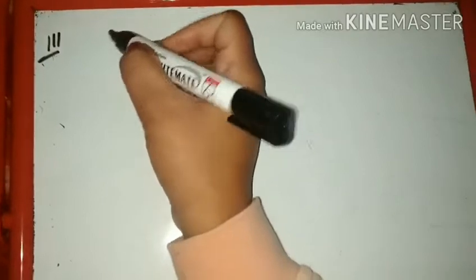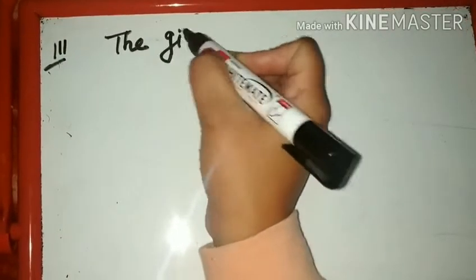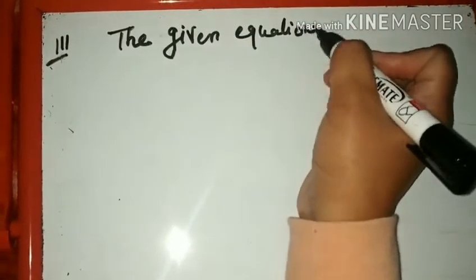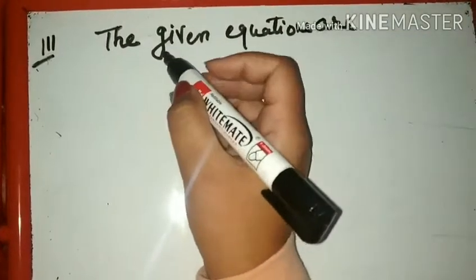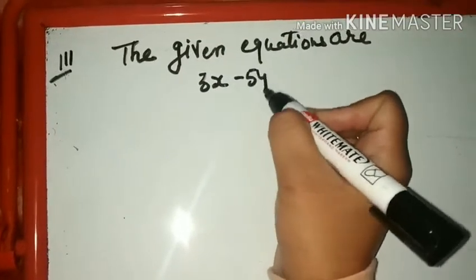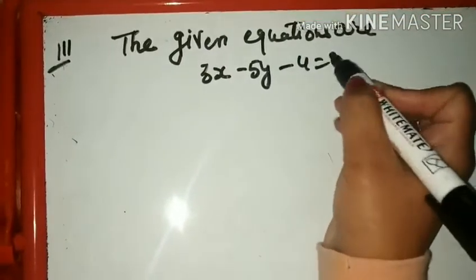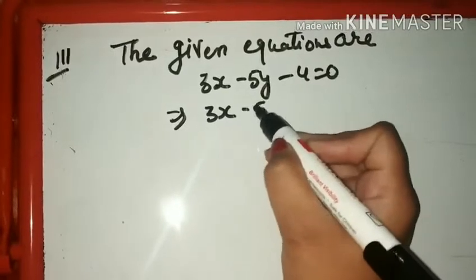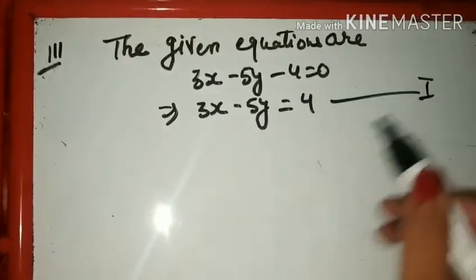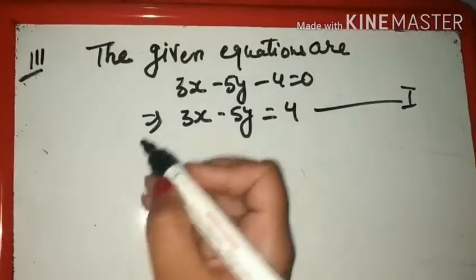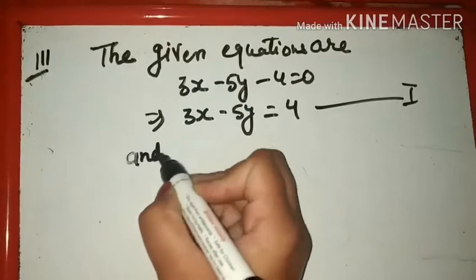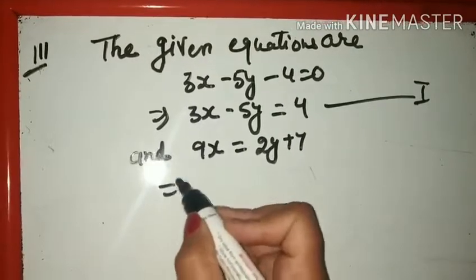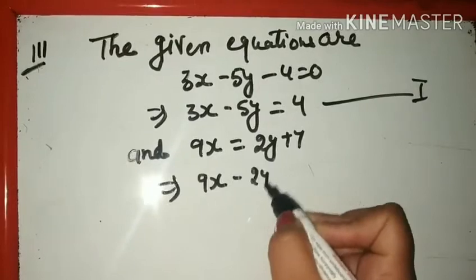Third part: the given equations are: 3X − 5Y − 4 = 0, पहले मैं इसको change करूंगी — this implies 3X − 5Y = 4. आप change नहीं भी करो, कोई problem नहीं होती। And दूसरी वाली: 9X = 2Y + 7 — this implies 9X − 2Y = 7.